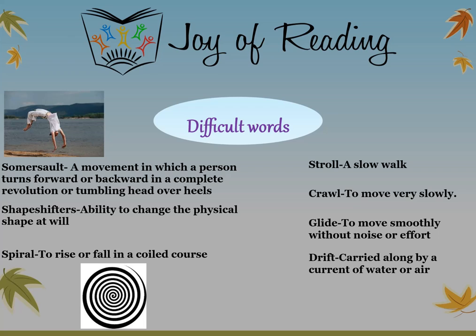Let's look at some difficult vocabulary words from today's story. 'Somersault' — a movement where a person turns forward or backward in a complete revolution, tumbling head over heels. 'Shape-shifters' — the ability to change physical shape at will. 'Spiral' — to rise or fall in a coiled course. 'Stroll' — a slow walk. 'Crawl' — to move very slowly. 'Glide' — to move smoothly without noise or effort. 'Drift' — to be carried along by a current of water or air.